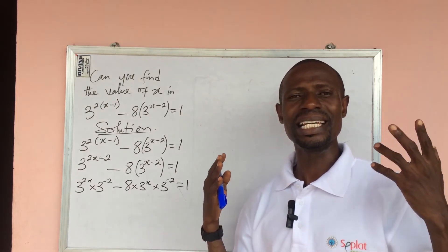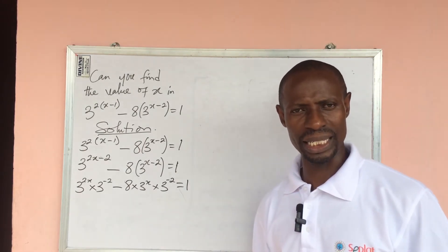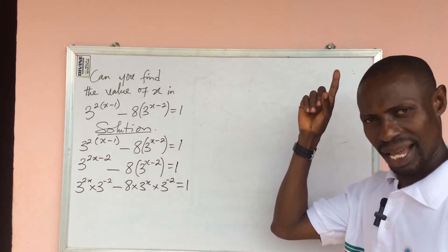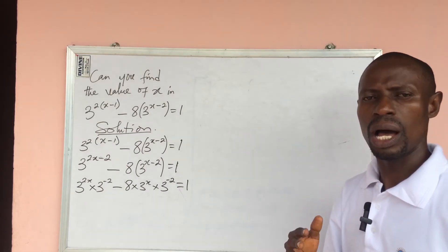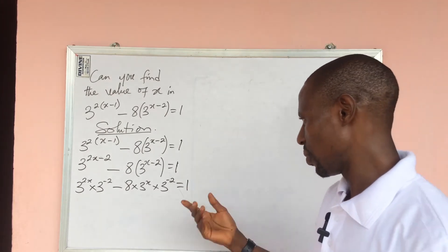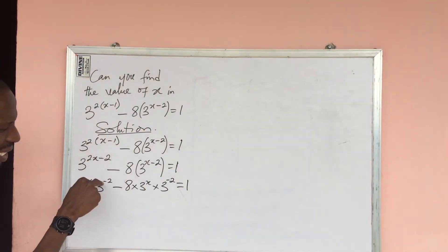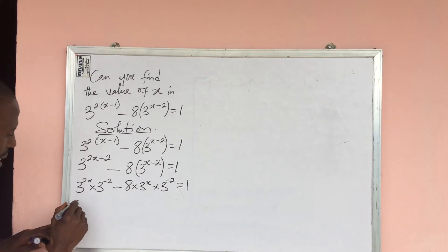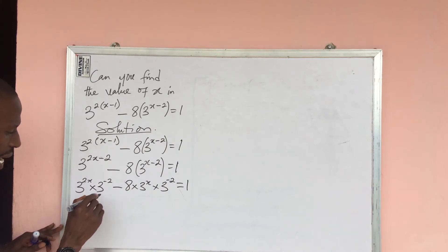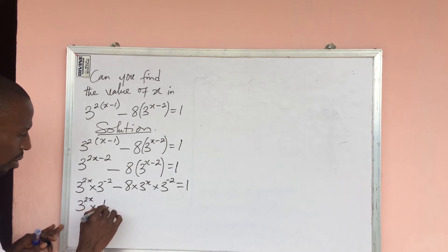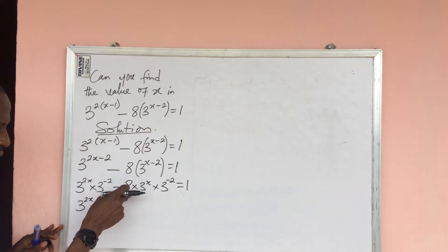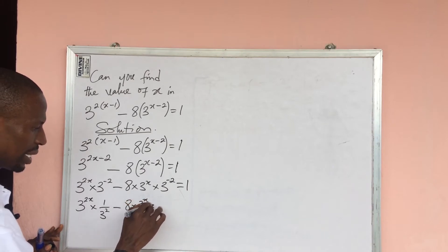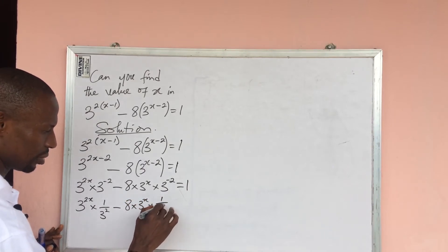I have a video on this titled 'The Several Pillars of Indices' — you can watch that to understand how the laws work. Now, the negative powers here can be rewritten: 3 to the power of 2x times 1 over 3 to the power of 2, minus 8 times 3 to the power of x times 1 over 3 to the power of 2, equal to 1.